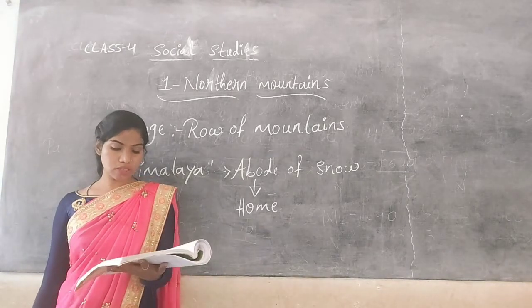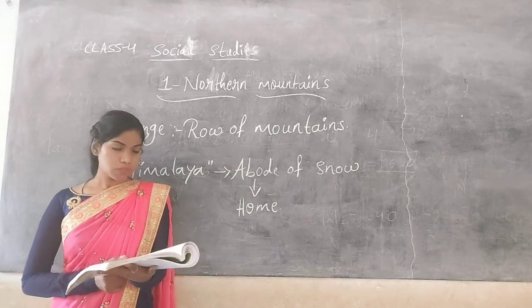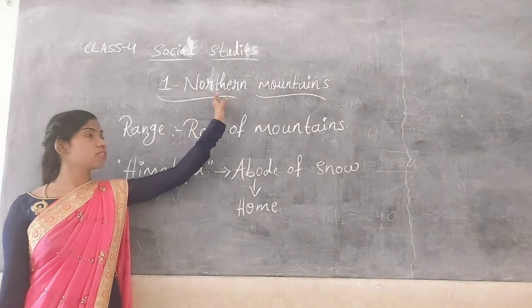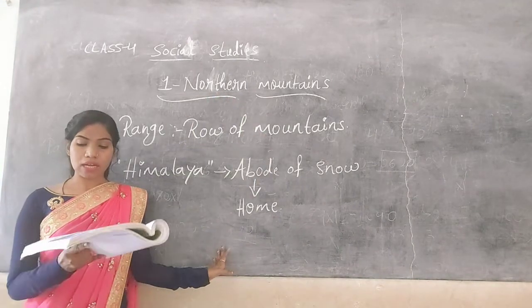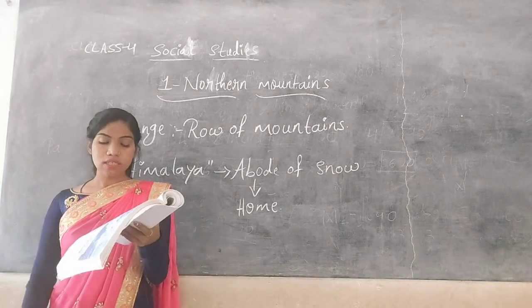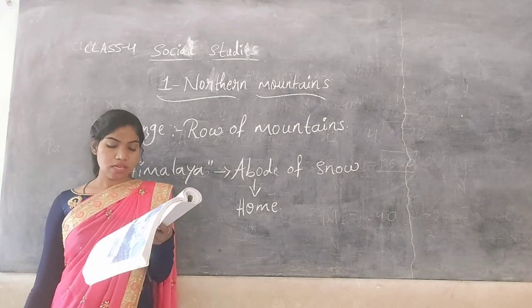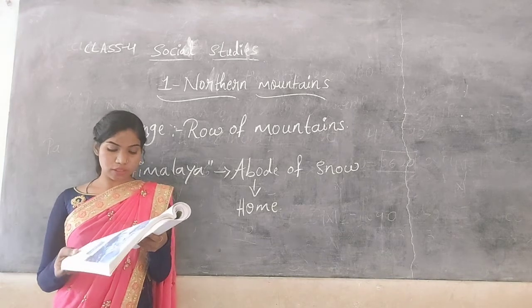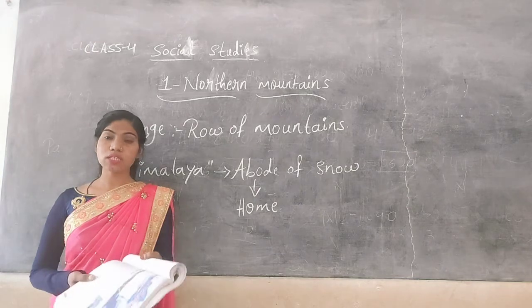In the northern mountains we can see three parallel ranges. Range means row of mountains. The three parallel ranges are: the Greater Himalayas or Himadri, the Lesser Himalayas or Himachal, and the third one is the Outer Himalayas or Shivalik.